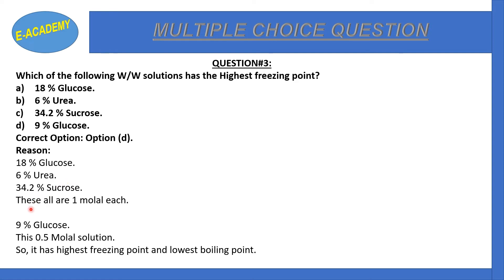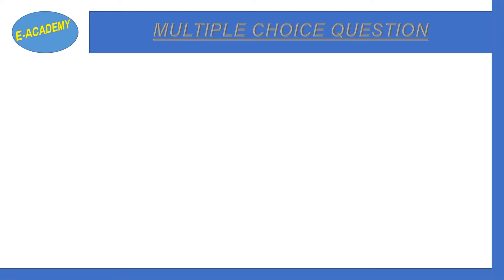The 9% glucose is a half-molar solution. Comparing molalities: 18% glucose, 6% urea, and 34.2% sucrose all have lower molality than 9% glucose. The boiling point elevation depends on molality, and 9% glucose has the highest molality among these options, giving it the highest boiling point.